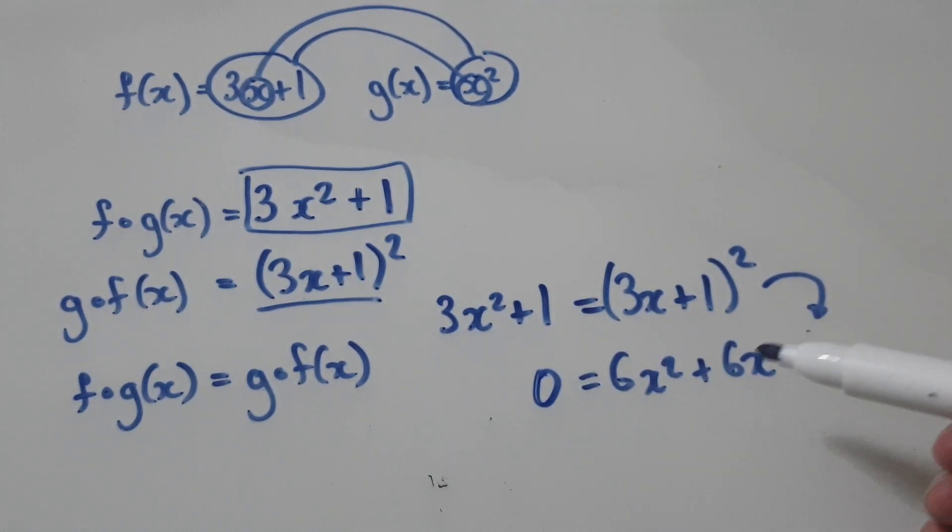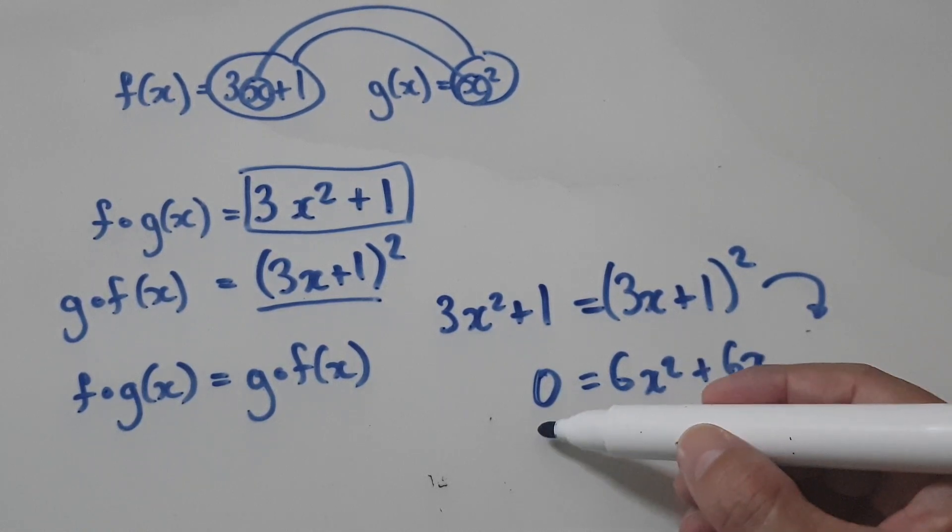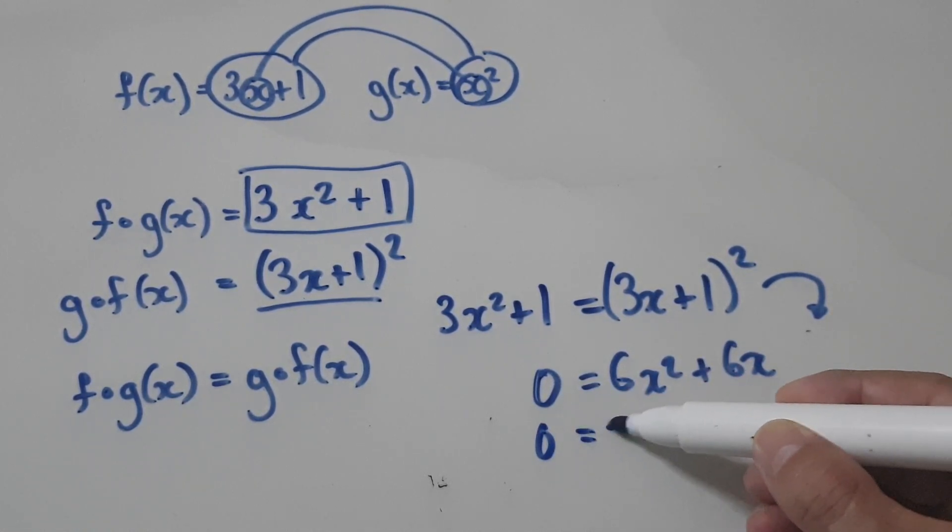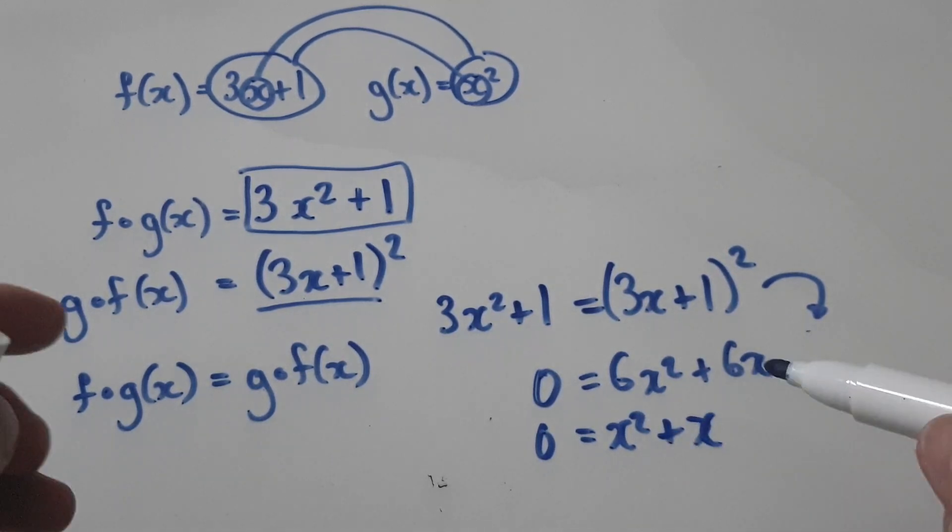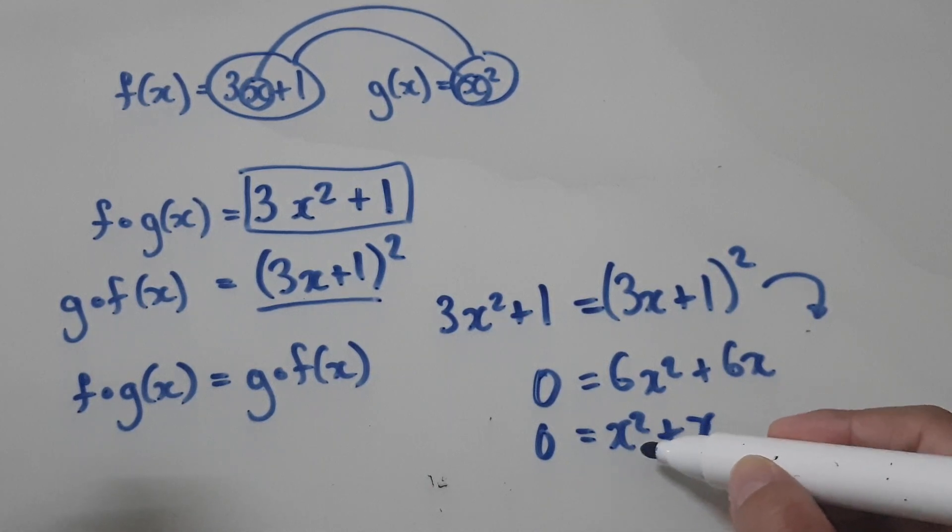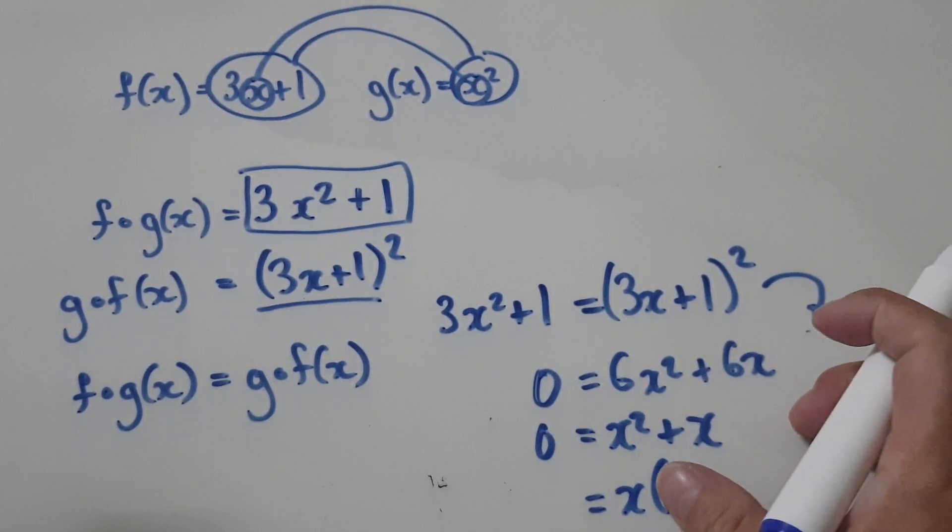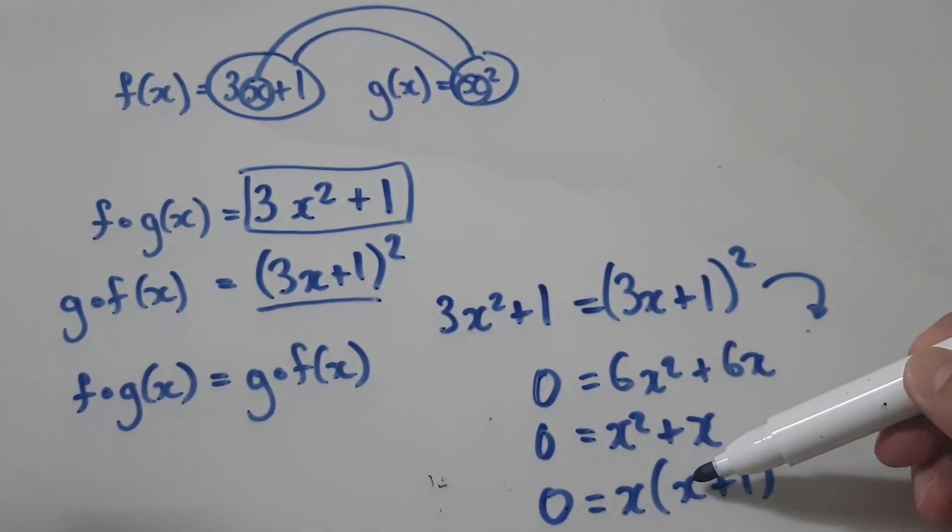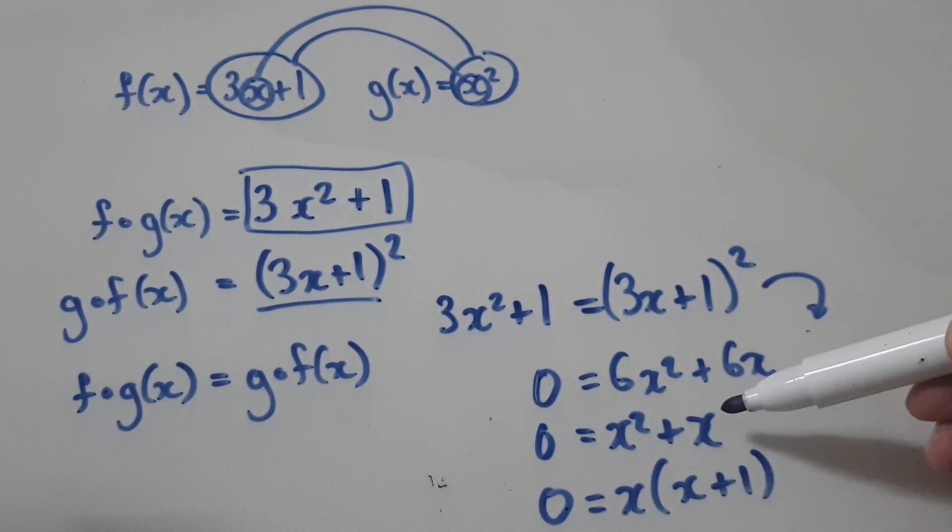And when you, oh let's divide everything by six. That will then give us zero divided by six would be zero, this would be x squared, this would be x. So to solve this, factorize the x because x is in common. It would look like this: x and then x plus one equals zero here, because x times x would be x squared, x times one would be x.